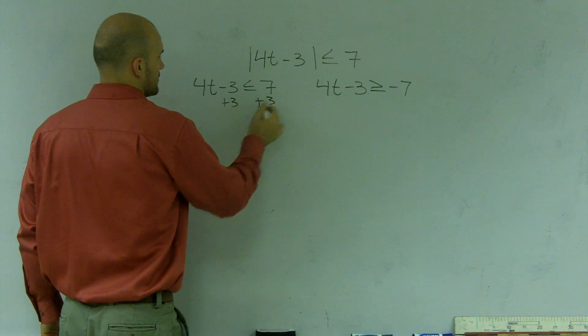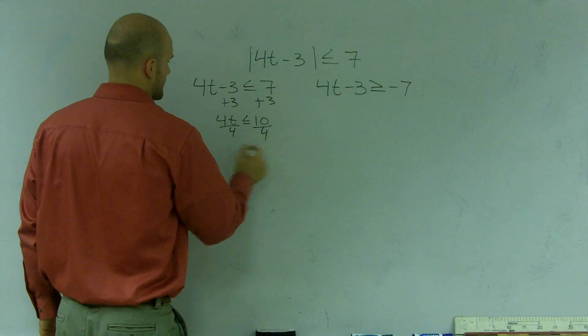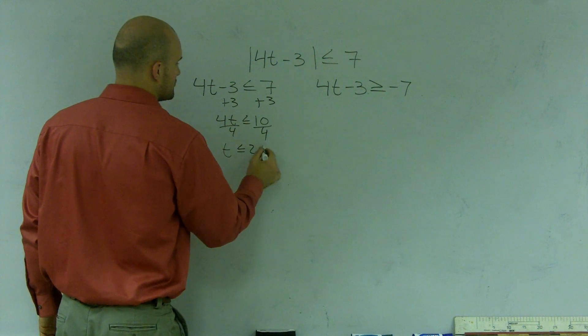Add 3, 4t is less than or equal to 10, divide by 4. t is less than or equal to 2.5.